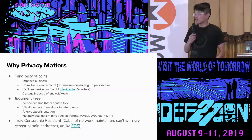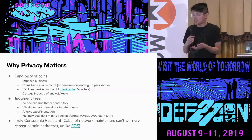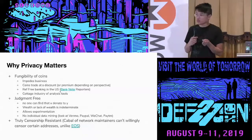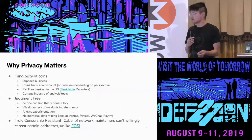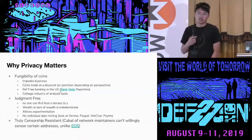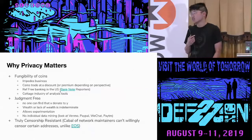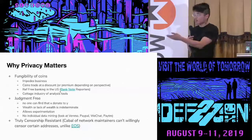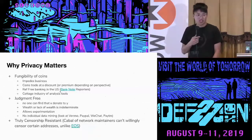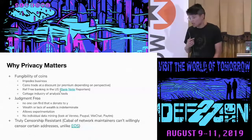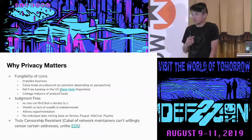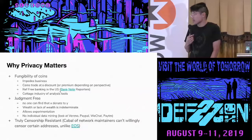Another reason why privacy matters is judgment-free transactions. If you can do whatever you want with your money, it allows for experimentation. But if everyone is tracking every single transaction you make, you're a lot more careful about how you spend your money. If you want to donate to some political cause and people can track this, it may have ramifications in your personal or work life, and it prevents experimentation. Also, your wealth - or perhaps lack of wealth - is visible to everyone on the blockchain, making you a potential target or creating personal safety issues.